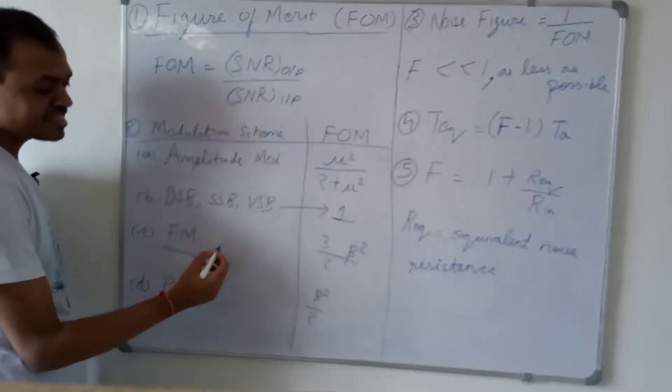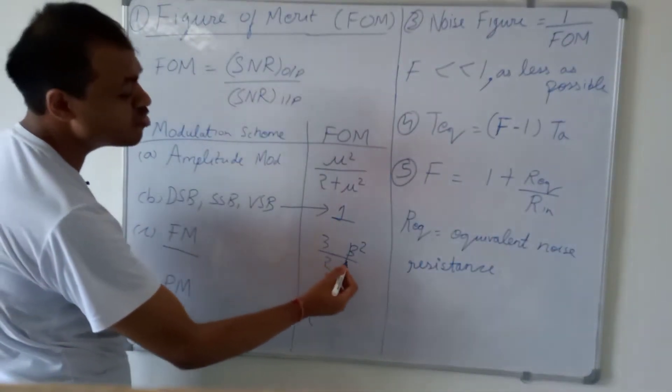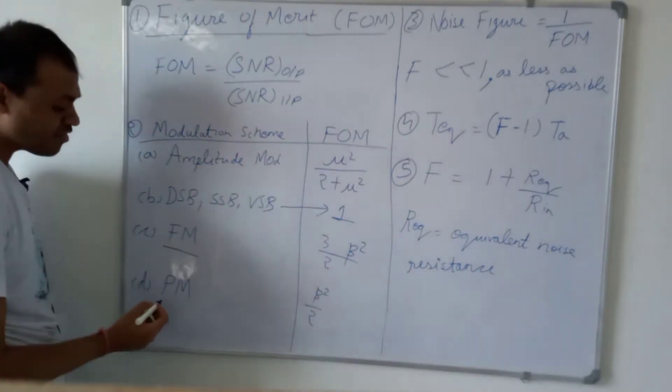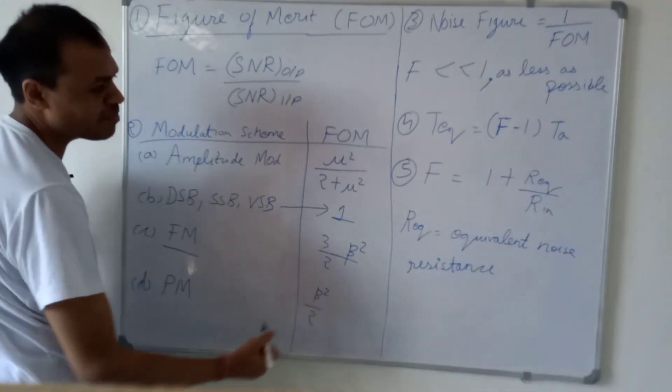For frequency modulation, the figure of merit is 3 upon 2 beta square. And for phase modulation, the figure of merit is beta square upon 2.